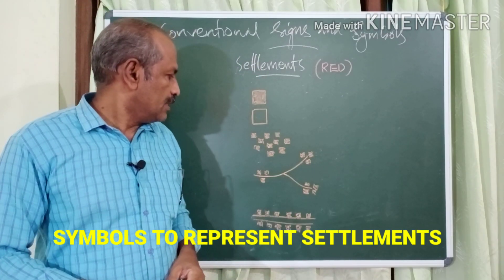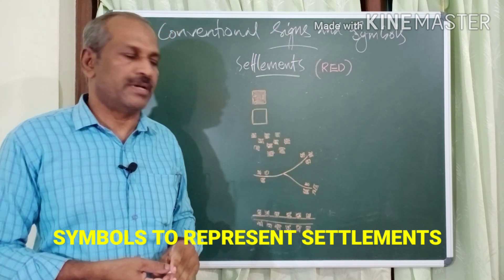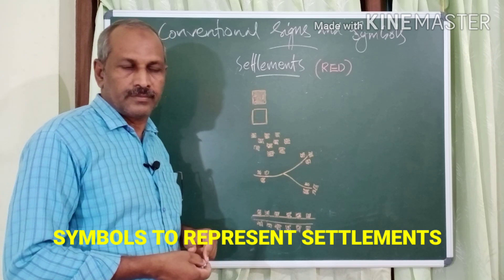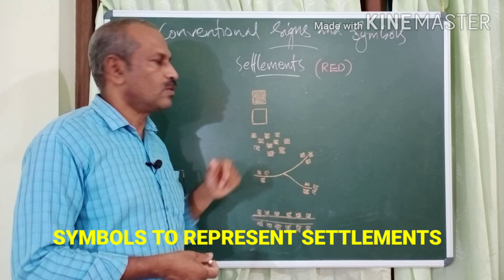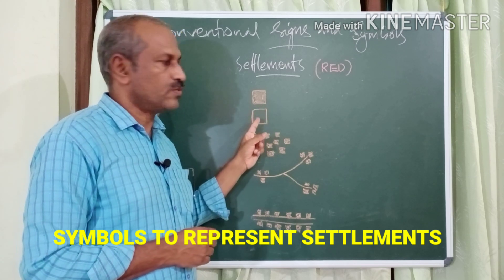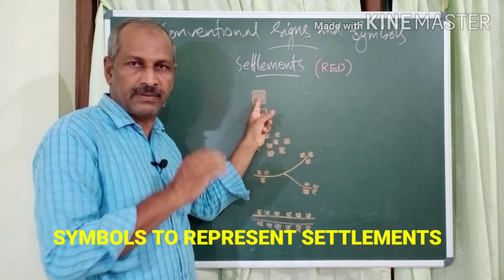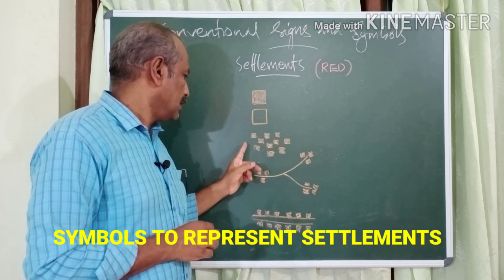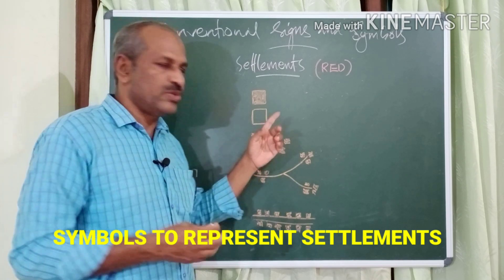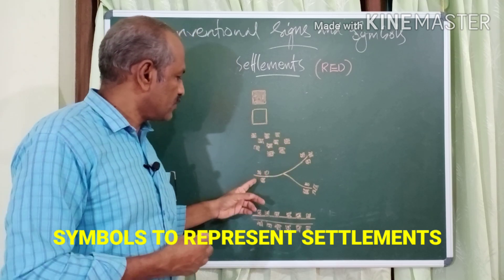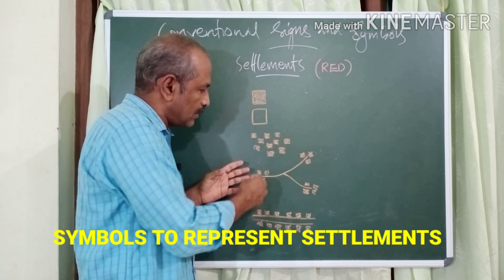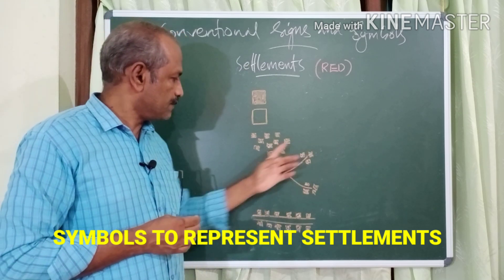Settlements are represented using red color symbols. A red-filled square represents a permanent house, while an unfilled red square represents a temporary house. A clustered settlement shows houses very close to each other, as seen in areas like Puzhyangadi. A dispersed settlement shows one or two houses spread at different places along a road.